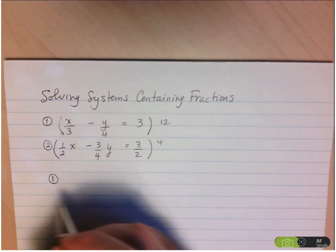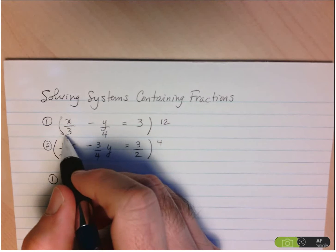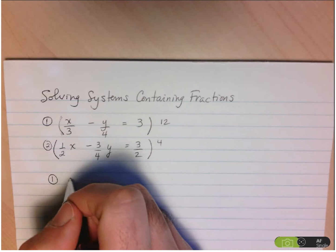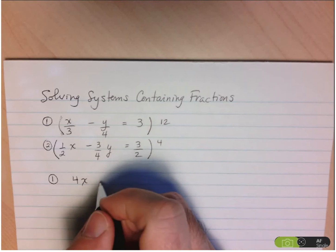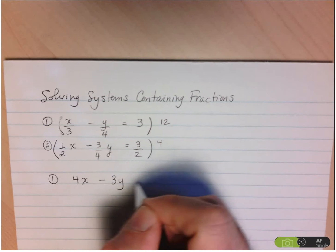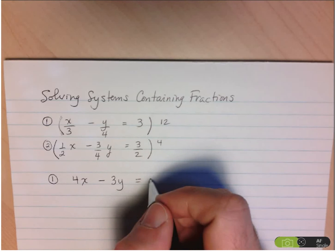Okay, so let's start. Equation 1 will now become, well, if I multiply 12 times x over 3, 3 and 12 simplify to 4, so I end up with 4x. Here, 12 and 4 simplify to 3, so minus 3y. And then, of course, I have to multiply both sides of the equation. 12 times 3 is 36.